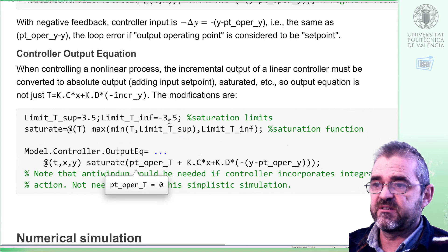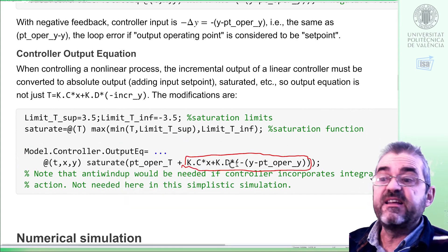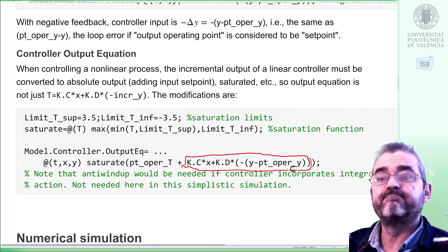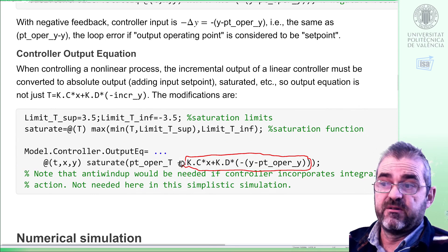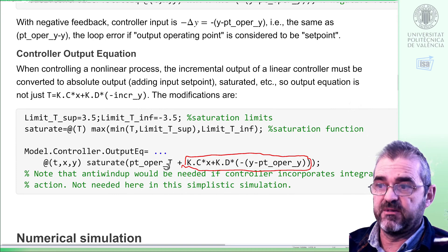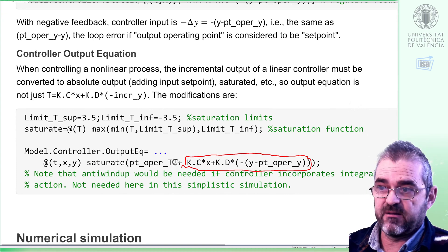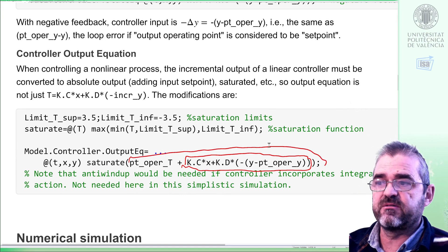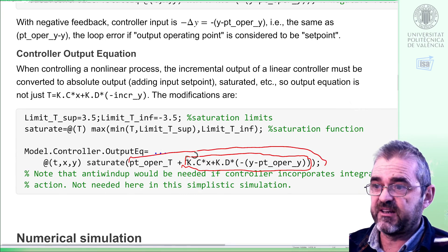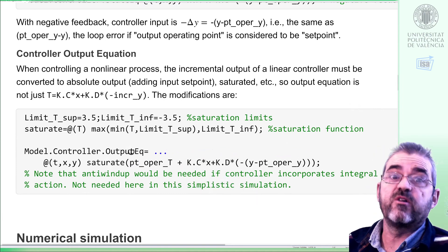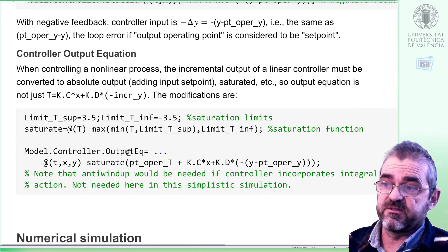So we end up with this way to encode the output equation with saturation, in which we have the linear part, C times x plus D times input, and then we add the operating point of the torque. In this case it's zero, but in a generic case it can be anything, so we add it to have it in absolute non-incremental value of torque, and afterwards we saturate that, and that will be the output actually fed to the process.